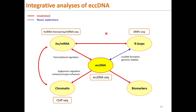ECC DNA profiles are interrelated with gene expression, R-loop formation, and chromatin activity states. In a bigger picture, established technologies — shown as solid red lines — are available to profile target or effector gene expression by RNA microarray and RNA sequencing, profile R-loops by DRIP sequencing, and profile chromatin epigenomic modifications and transcription factor binding by ChIP sequencing, to gain comprehensive insights into ECC DNA biology by integrating with ECC DNA sequencing analysis. Novel connections between ECC DNA and R-loops for ECC DNA formation and genomic instability, shown as dotted blue lines, can be explored by integrated ECC DNA sequencing and DRIP-C-seq analysis.